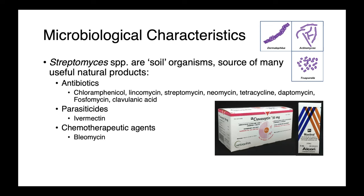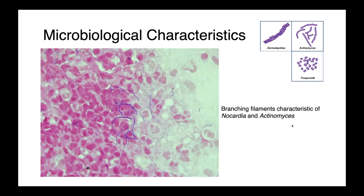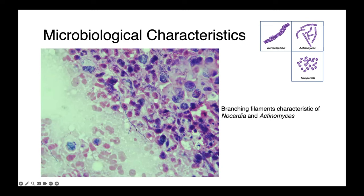In this cytological preparation, you can see the branching filaments characteristic of both Nocardia and Actinomyces — these long slender rods with branch points. Very classical. Here's another image where you can see these long branching filaments within the infected tissues.